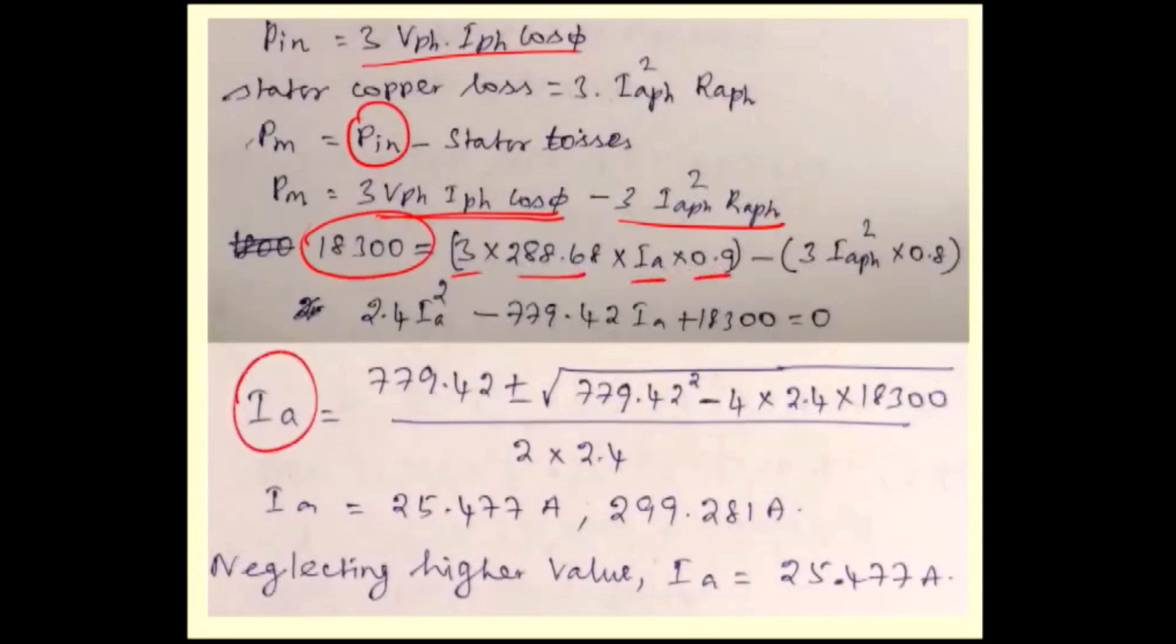Finally, we are going to calculate IA value. In third problem, they gave efficiency. Here the mechanical loss and other data is given, from that we derive IA value. This is another approach. Pm is given, then 3 Vphase IA phase power factor minus 3 IAphase squared times 0.8, that is RA value.